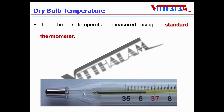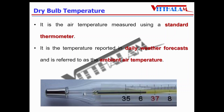The first property is dry bulb temperature. It is the air temperature measured using a standard thermometer where the bulb is dry, and hence there is no effect of moisture present in the air. When people refer to the temperature of the air, they are normally referring to its dry bulb temperature. It is the temperature reported in daily weather forecasts and is referred to as the ambient air temperature.